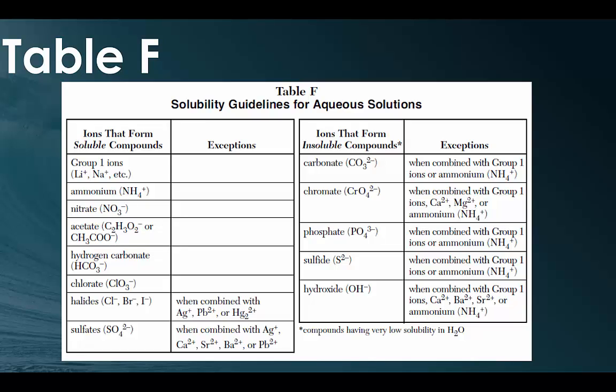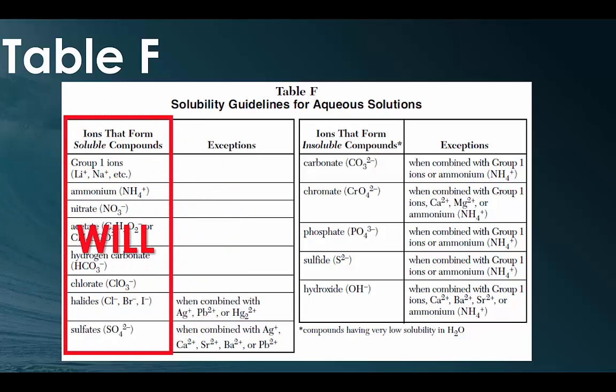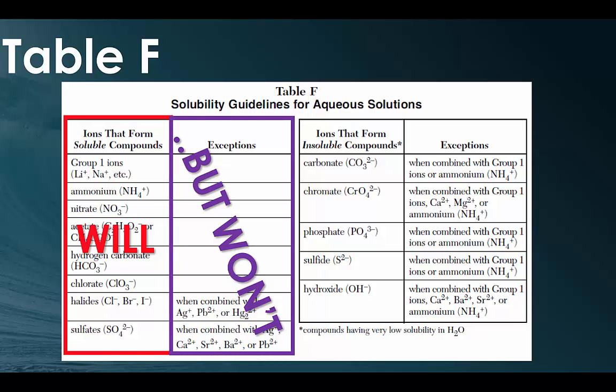All right guys, so table F in your reference tables, hopefully you guys have it out. We're going to be analyzing the solubility guidelines for aqueous solutions. So we notice on the left we have ions that form soluble compounds, that's stuff that's going to dissolve in water, and on the right we have ions that form insoluble compounds. So the insoluble compounds are going to be the ones that are precipitates. If we notice on the far left-hand side for the column that says ions that form soluble compounds, they will all dissolve in water, with the exception of anything over here. So for example, if you have a halide, all halides will dissolve in water, unless you have it with silver, lead, or mercury. So lead(II) chloride is not soluble in water.